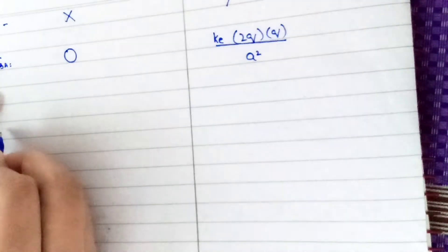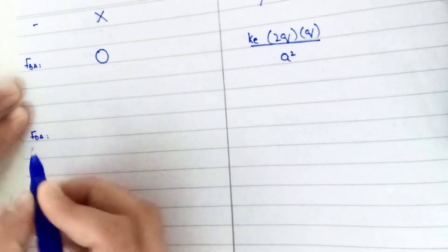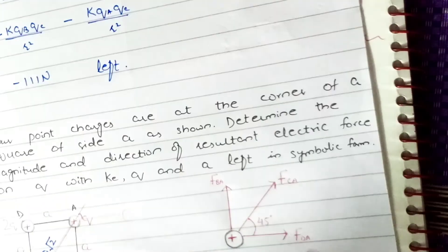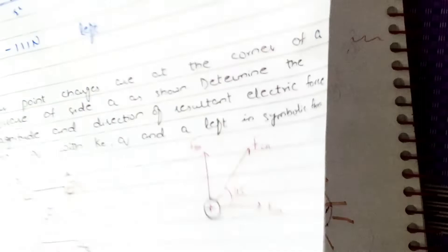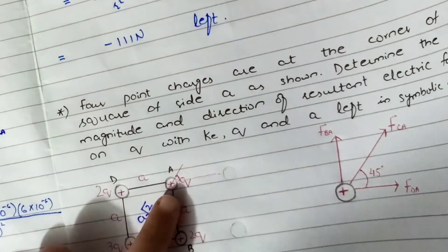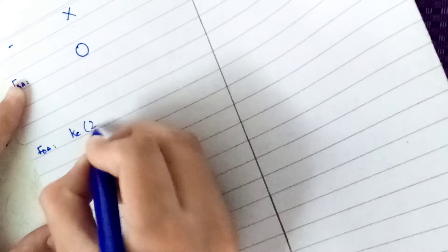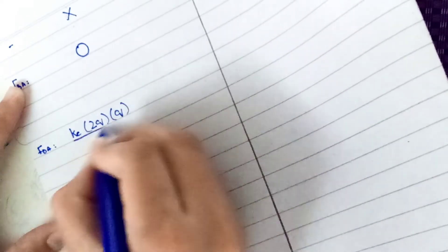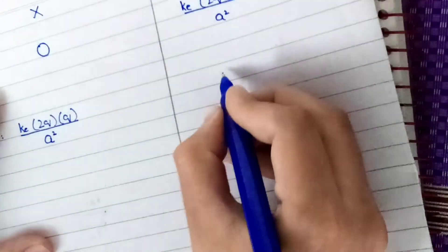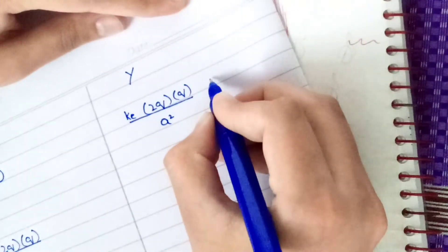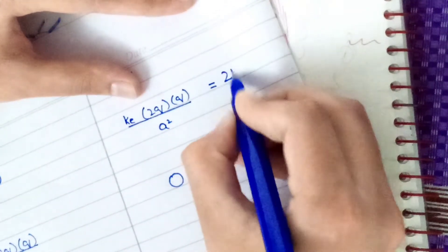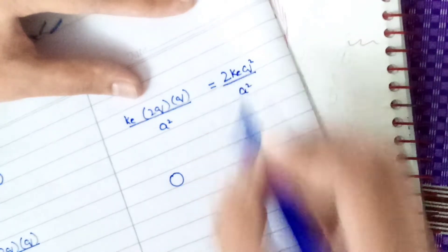For force Fda, it has an x-component but no y-component. The x-component of Fda is ke * 2q * q / a², which equals 2ke * q² / a². This is because charge D is 2q, charge A is q, and the distance between them is a.